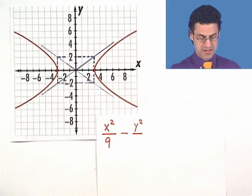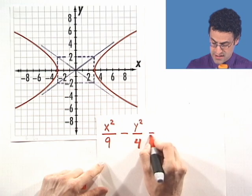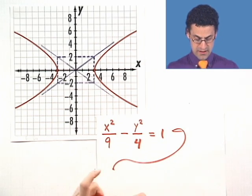So in this case, I see the co-vertex is two. I square it. I get four. And I always set it equal to one. And there is the equation for this particular hyperbola. Let's take a look at another example.